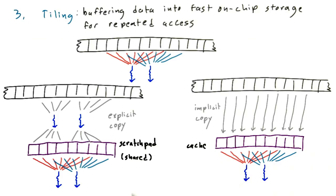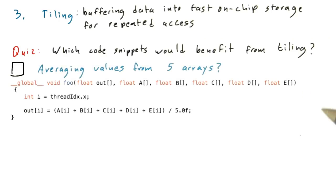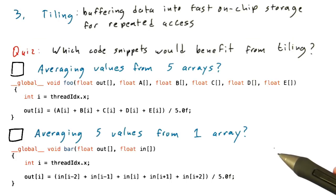Let's have a quiz. Which of the following two code snippets would benefit from tiling? The first snippet averages values from five arrays. The second averages five values from one array.